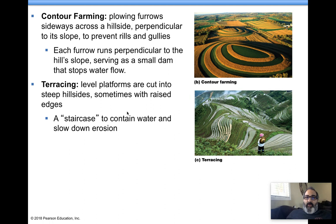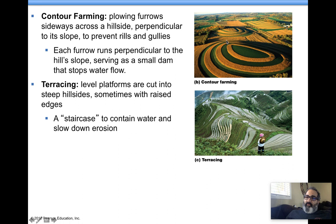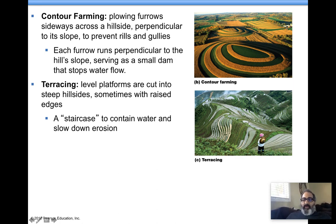Contour farming is another method of reducing erosion. Furrows are planted across hillsides. They prevent rills and gullies from forming, slowing down rill erosion by creating channels for water to travel. They serve as little dams preventing water from making rills and gullies. Terracing creates platforms on the side of a hill, moving water in certain ways and creating drainage so the hillside doesn't erode away.